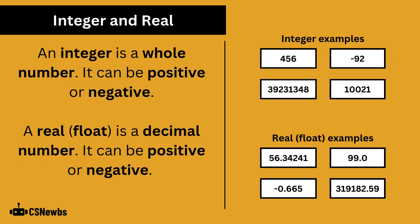An integer is a whole number — it can be positive or negative. A real, or float, is a decimal number, which again can be positive or negative. Integers and reals do not need speech marks when written in a programming language.